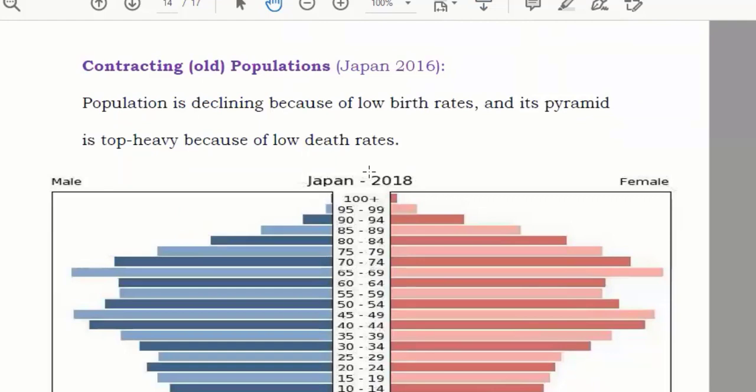After that you have contracting. Contracting means things become smaller. Now see here, population is declining because of low birth rate. See here, birth rate is very low. Why?